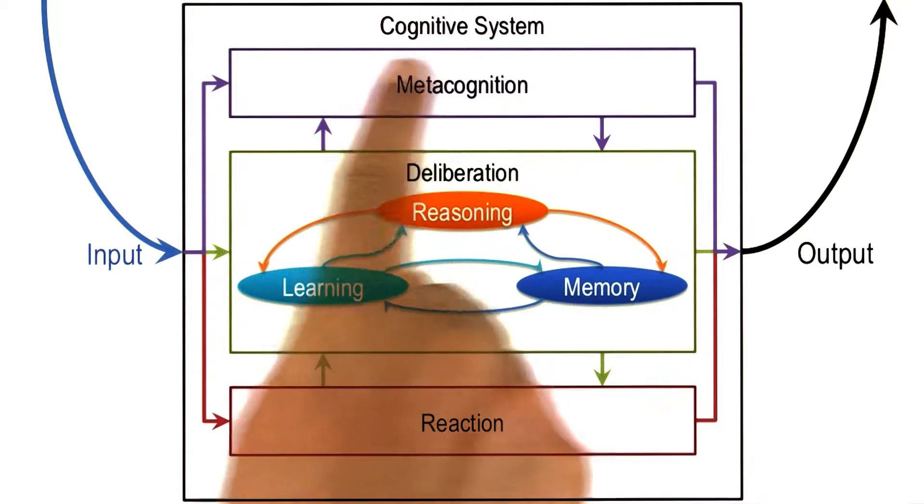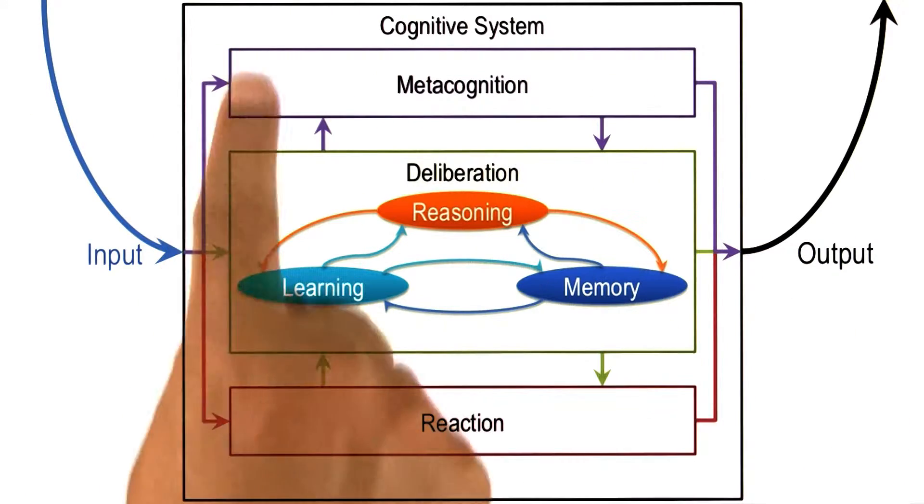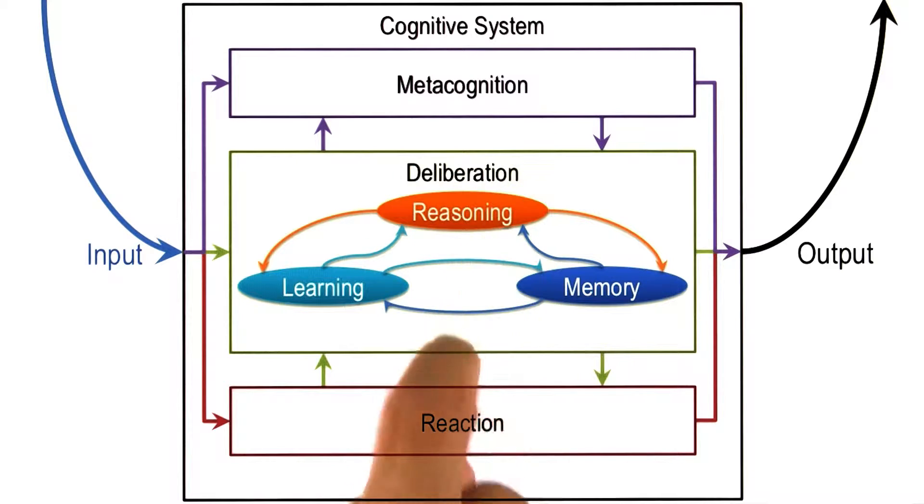In this architecture for a cognitive system, we have drawn these boxes as if metacognition was completely separate from deliberation, and deliberation was completely separate from reaction.